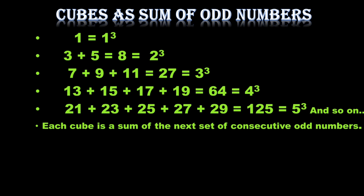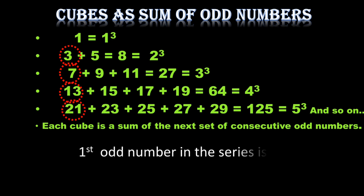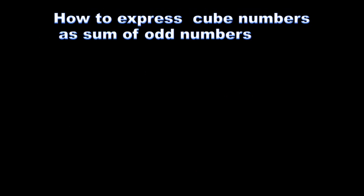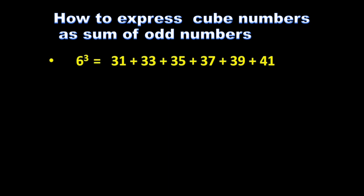Each cube number is a sum of a set of consecutive odd numbers. But how do we find the starting odd number, since it doesn't always start from 1? We use the expression: n × (n − 1) + 1, which gives the starting odd number for expressing any cube as a sum of consecutive odd numbers.